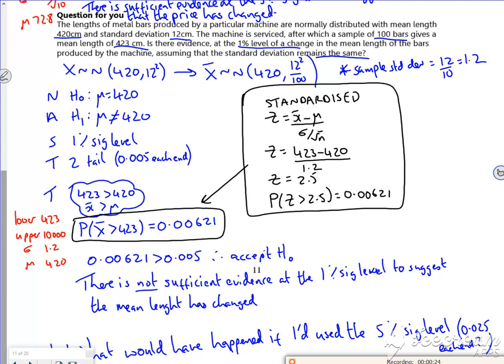You've got to be really far away from it to chuck it out. So we've got like 0.006, so 0.6 of a percent out, and it's still okay. So it's in that top 0.6, so there's not sufficient evidence.